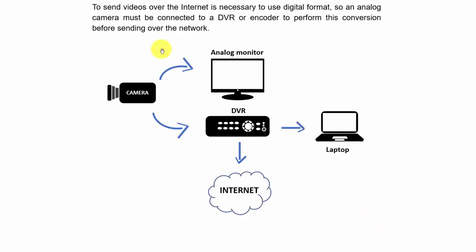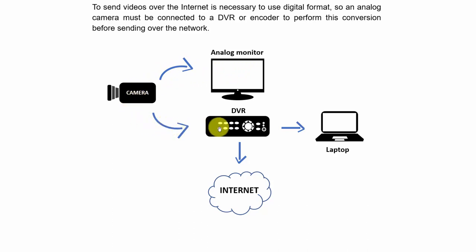Here is how it works. You have your camera — it doesn't matter if it's a low-resolution or high-resolution analog camera. The camera can send the signal directly to an analog monitor because it's an analog signal, or you can send the signal from the camera to the DVR, which converts it to digital, and then you can view it on a laptop or send it to the internet.